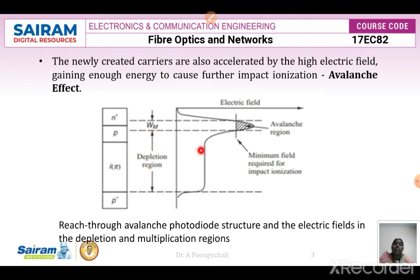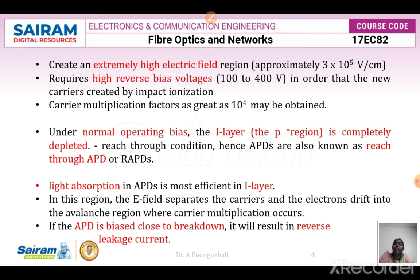This is the reach-through avalanche photodiode structure. In the depletion region, the electric field is constant. We create an extremely high electric field region of approximately 3×10⁵ volts per centimeter. Avalanche photodiodes require high reverse bias voltages, in the range of 100 to 400 volts, for new carriers to be created by the impact ionization process. When impact ionization occurs, carriers are multiplied and the multiplication factor M can be as great as 10⁴.